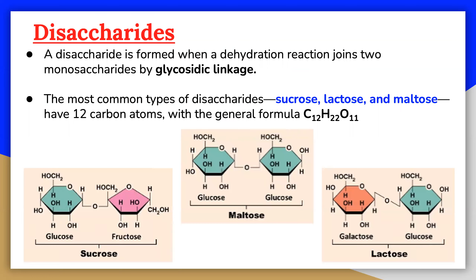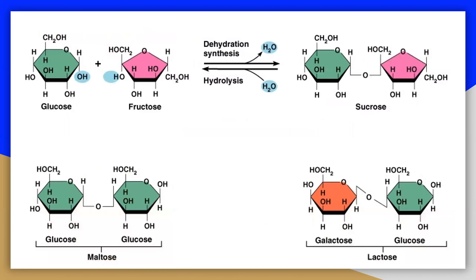The differences in these disaccharides are due to atomic arrangements within the molecule. The joining of monosaccharides into a double sugar happens by a condensation reaction, which involves the elimination of a water molecule from the functional groups. Breaking apart a double sugar into its two monosaccharides is also accomplished by hydrolysis, with the help of enzymes.